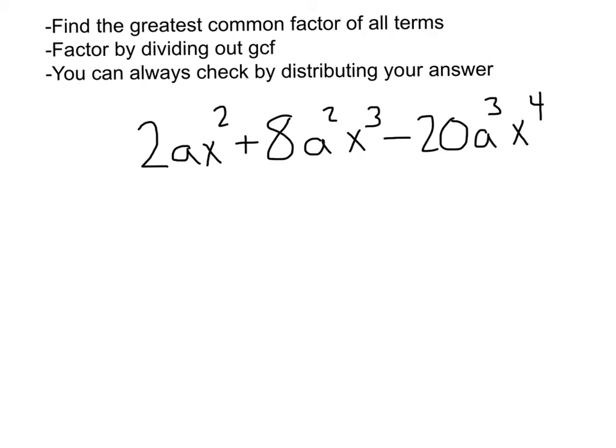Whoa! This is crazy! Alright, let's see if we can do this together. First, I see that we have a 2, an 8, and a 20. Well all of those have a 2 in common as their greatest common factor.